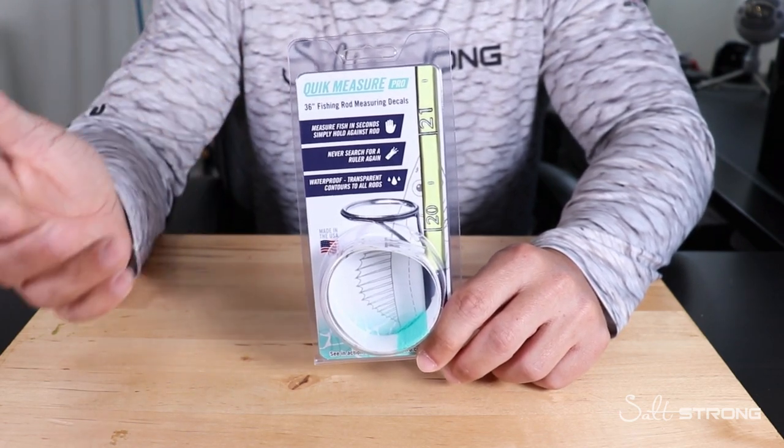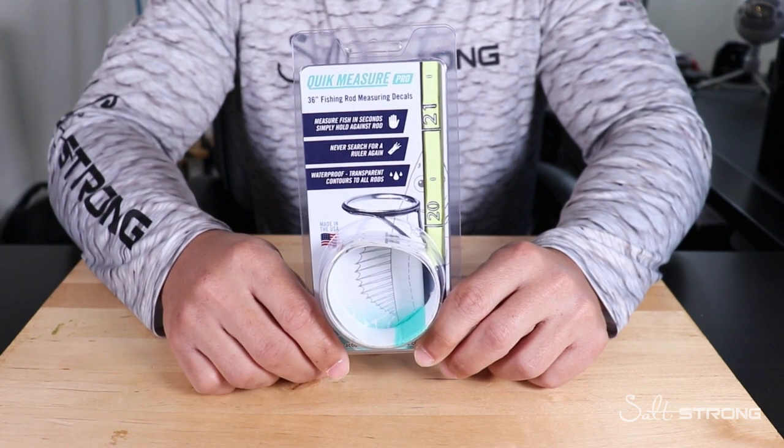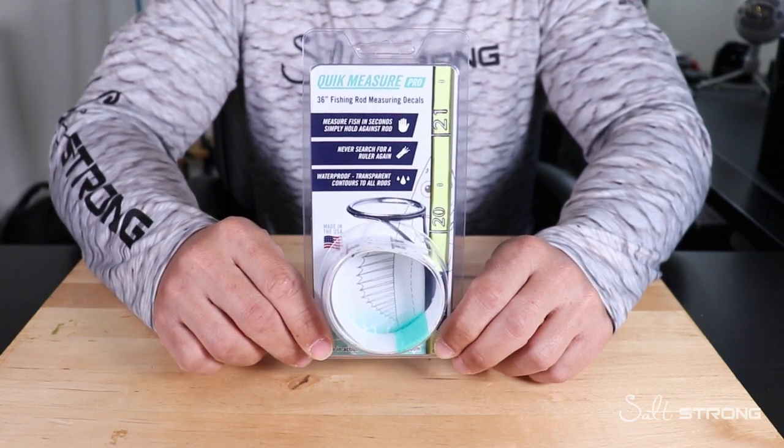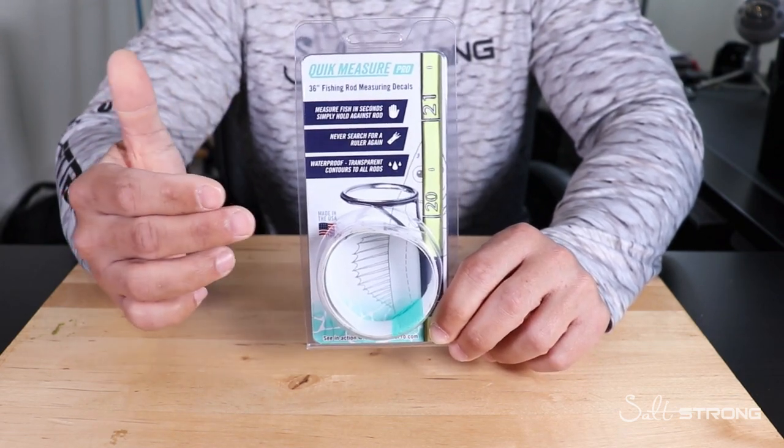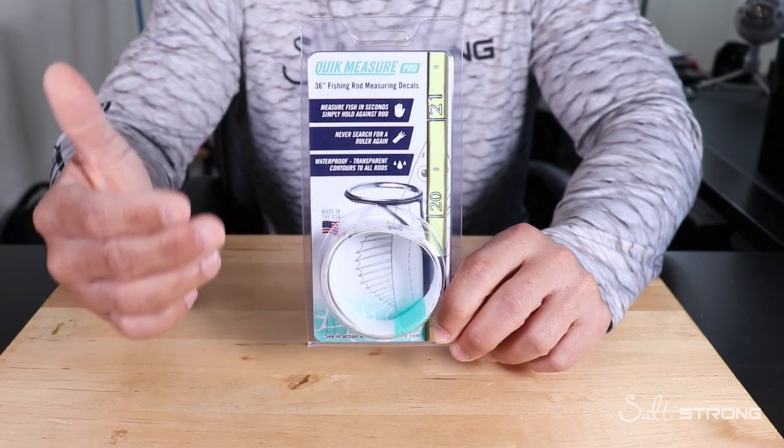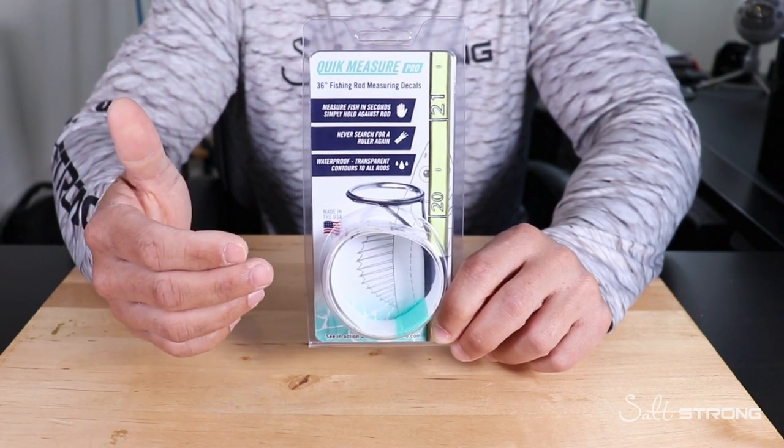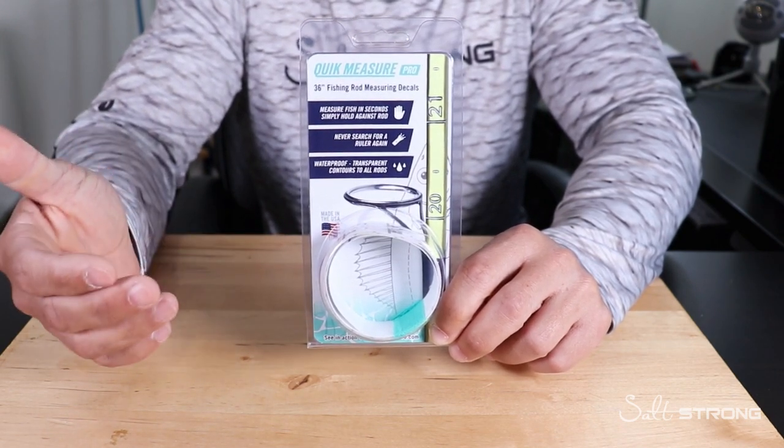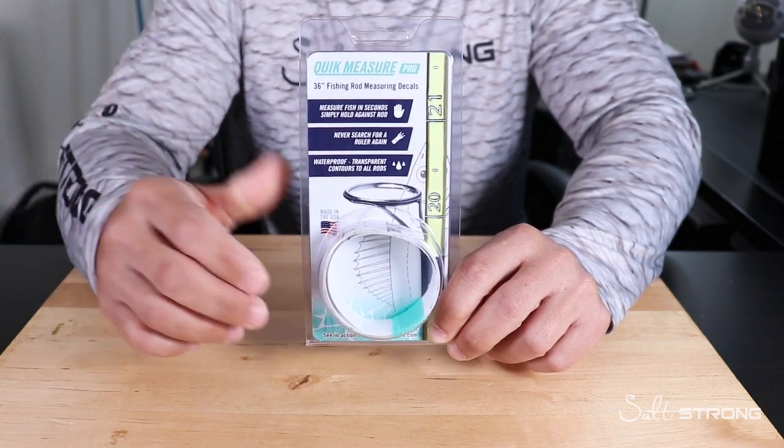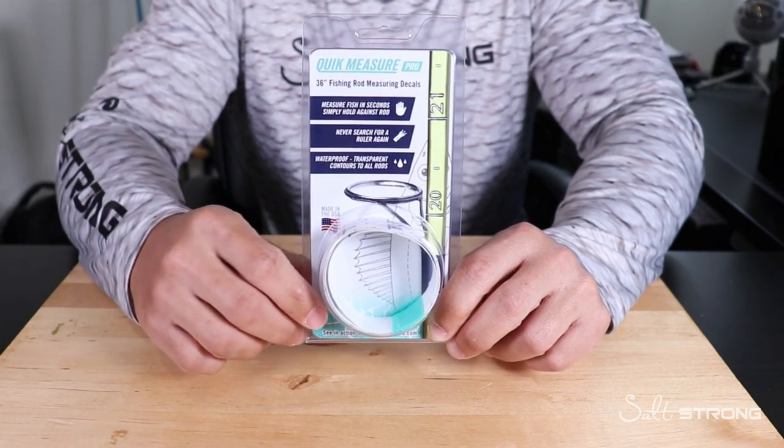If you forget your ruler all the time or your measuring board, this can be something that will basically be with you at all times because you can actually put this on your fishing rod and you can use your fishing rod to measure a fish that you catch. If you're a wade fisherman or you fish from shore, or you just don't have room to carry a full-size ruler with you or you just happen to forget it.